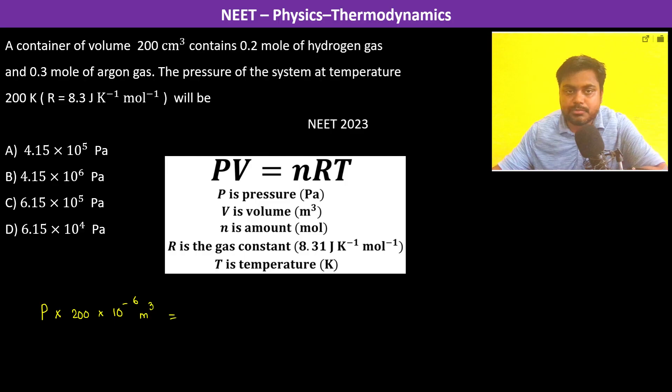n, the total number of moles, is 0.5 moles into R which is 8.3 Joule per Kelvin per mole, and the temperature is 200 Kelvin. Kelvin cancels out. It's important to remember the formula and also the units which are used in it.